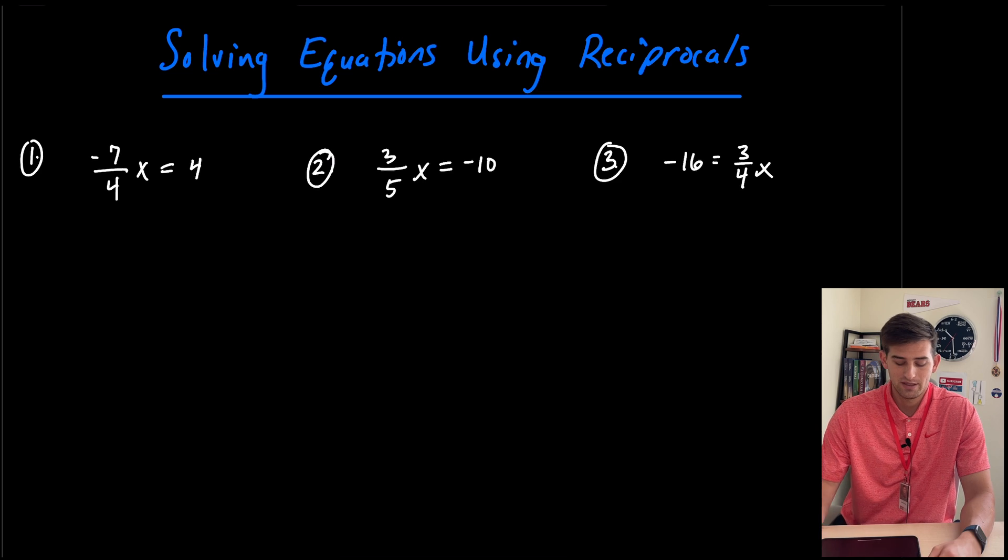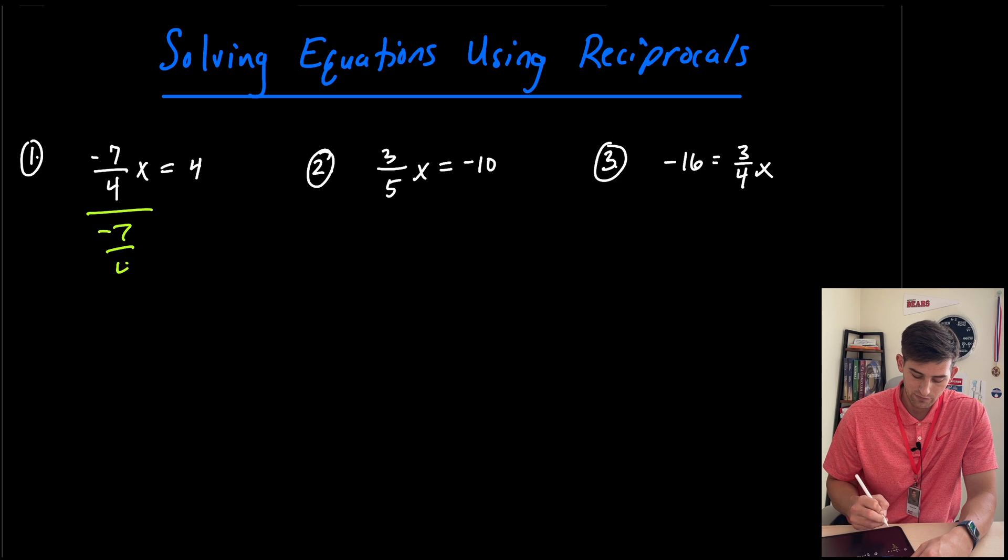Well that creates a complex fraction, right? So if I wrote it like this, divide by negative seven over four, then it's like negative seven over four divided by negative seven over four, and we know we would keep the first fraction, flip the second fraction, and change to multiplication.